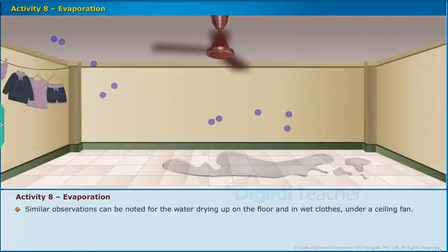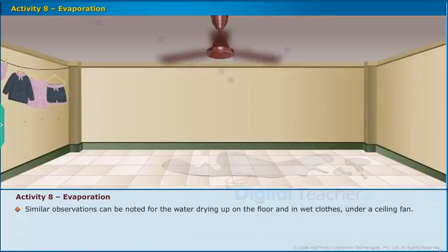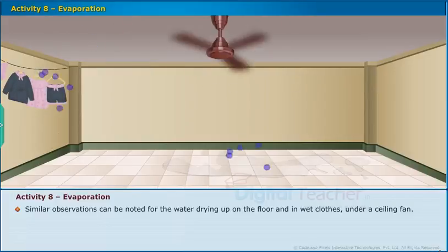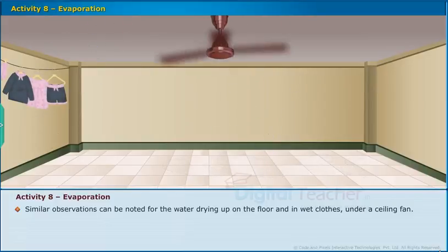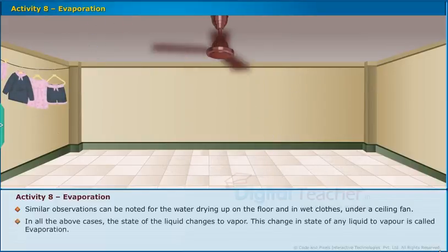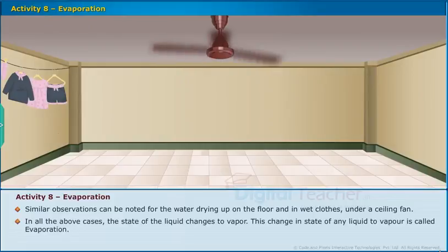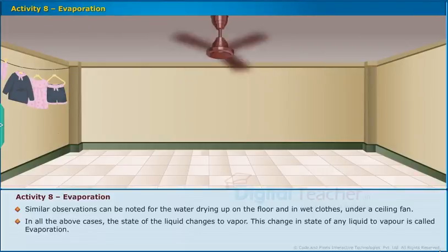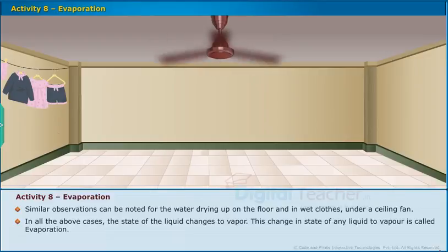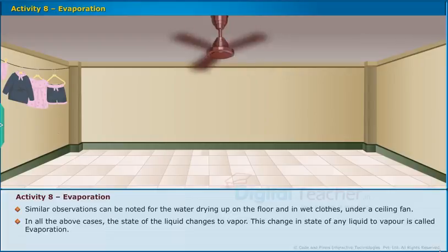Similar observations can be noted for water drying up on the floor and in wet cloths under a ceiling fan. In all the above cases, the state of the liquid changes to vapor. This change in state of any liquid to vapor is called evaporation. Let us learn more about the process of evaporation to understand the reasons behind these observations.